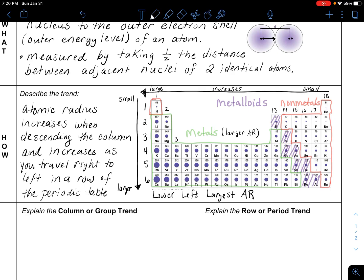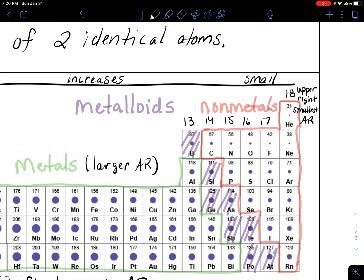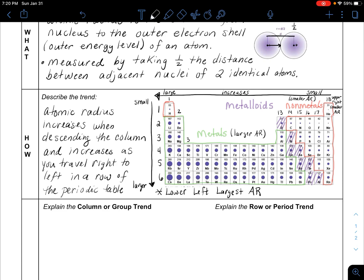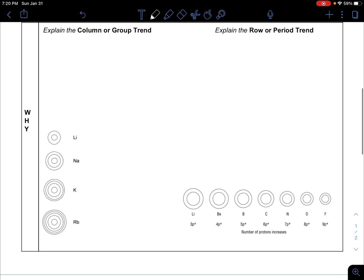My lower left are my largest and the opposite, my upper right are my smallest atomic radius. Non-metals tend to be much smaller at least at the start for their neutral atomic radii. Now let's go through why this is, where life gets a little bit more challenging.